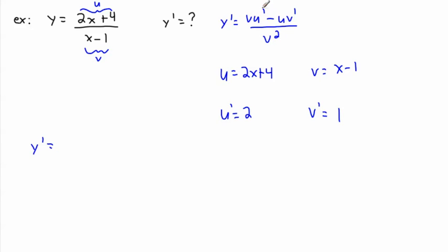I'm ready to write out my derivative. It's v times u prime, so 2 times x minus 1, that's v u prime, minus u v prime. I need this times 1, so I'm just going to write 2x plus 4. The biggest mistake students make—I want to show you the mistake most students would actually make.